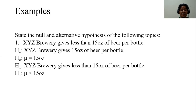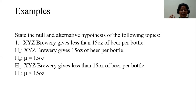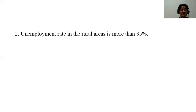Notice that from the statement, the null hypothesis is always stated with an equal sign, while the alternative hypothesis uses an inequality symbol such as less than, greater than, or not equal.